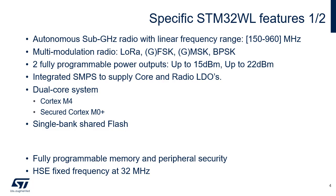Two programmable power outputs are available: 15 dBm and 22 dBm, with 32 steps for each. The 15 dBm output is the more optimized one in terms of power consumption. Both an embedded LDO and an embedded SMPS are available inside the chip, so that customers can adapt the power efficiency of the device according to their applicative needs.